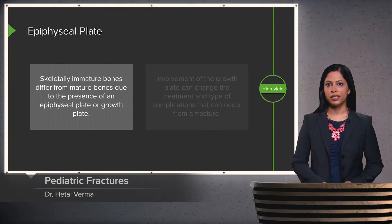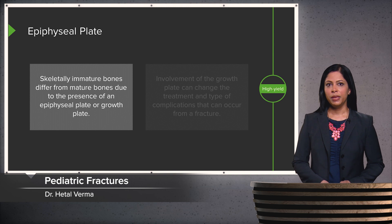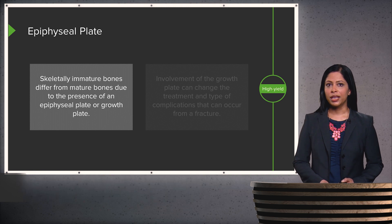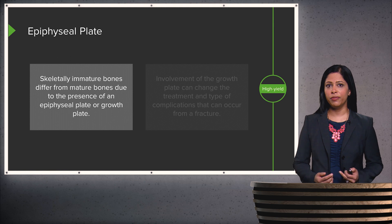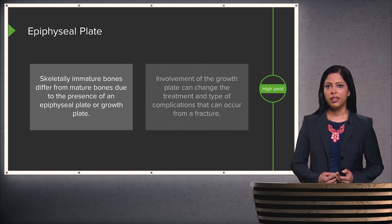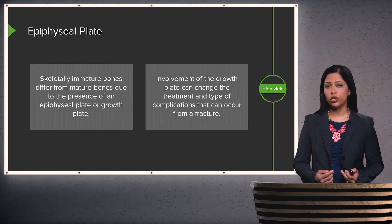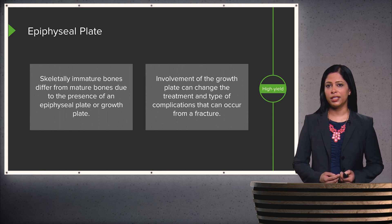Pediatric fractures deserve a discussion separate from adult fractures. Pediatric bones are skeletally immature, and they differ from mature bones because of the presence of an epiphyseal, or growth plate. The involvement of the growth plate can change the treatment, and it can also change the type of complications that can occur from a fracture.